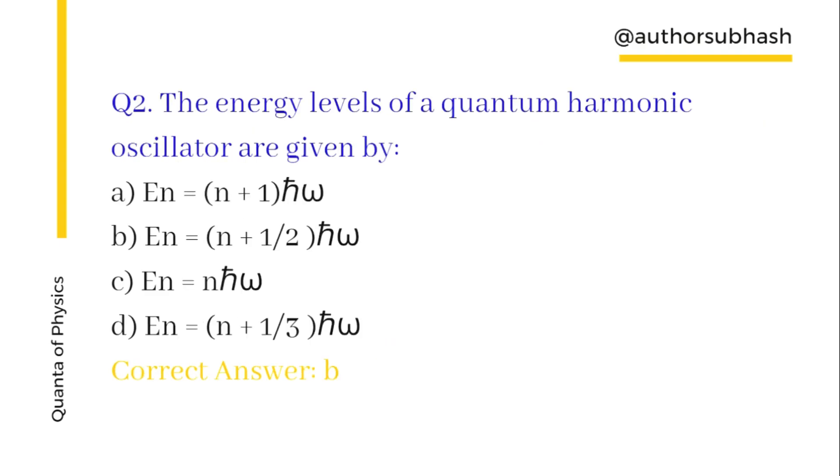Question number two: The energy levels of a quantum harmonic oscillator are given by En, energy of the nth level, equal to (n + 1/2)ℏω.